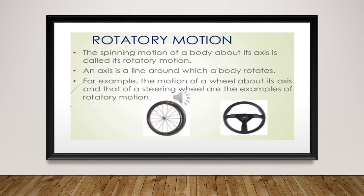Now let's come to the second type of motion: rotatory motion. The spinning motion of a body about its axis is called rotatory motion. If a body spins or rotates about a fixed point or axis, its motion is called rotatory motion. The rotation of the earth about its own axis, the wheels of a moving car, and the blades of a moving electric fan are examples of rotational motion.